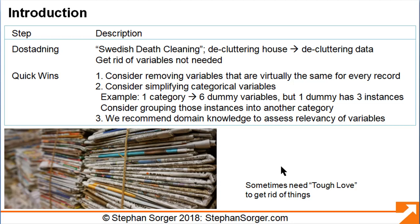We can get some quick wins by a quick examination of the data. First, we can consider removing variables that are virtually the same for every record. We can find this out by running summary statistics and identifying variables where the min and max values are nearly identical. Second, we can simplify categorical variables. For example, one categorical variable could be represented by six dummy variables in R.